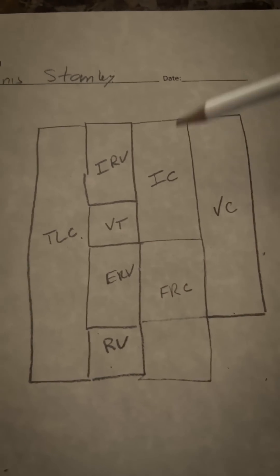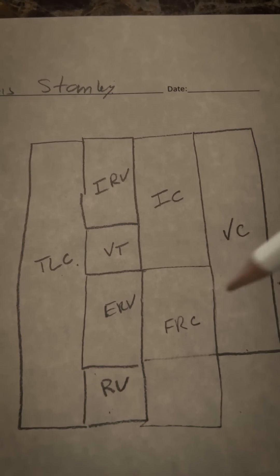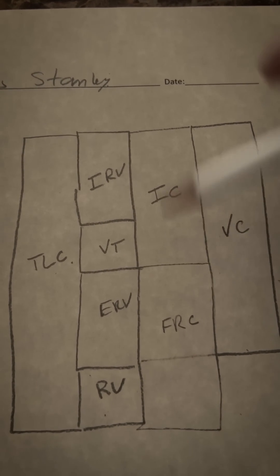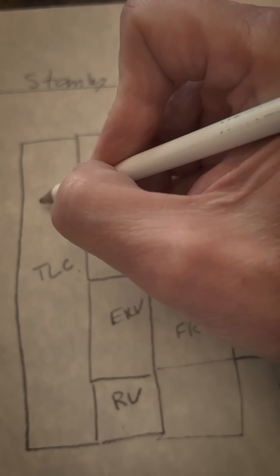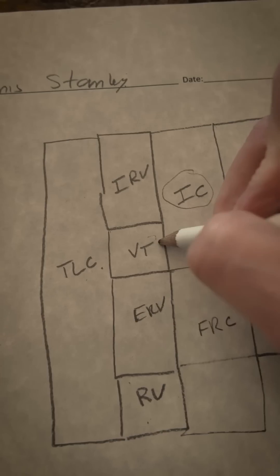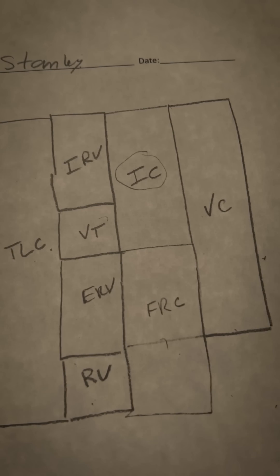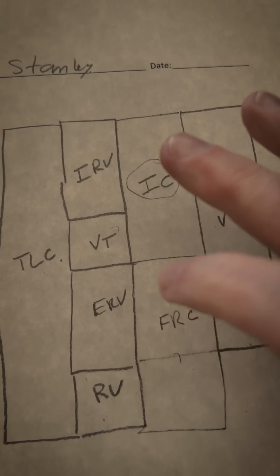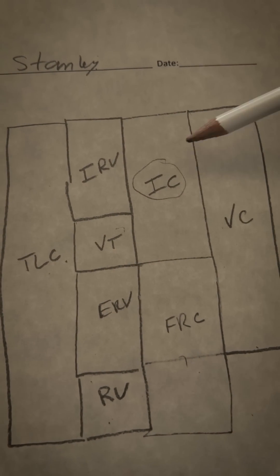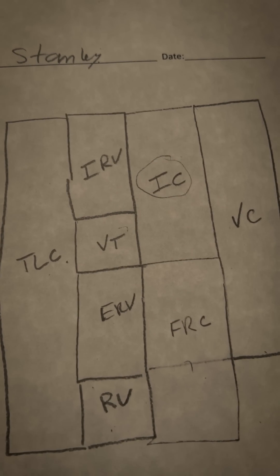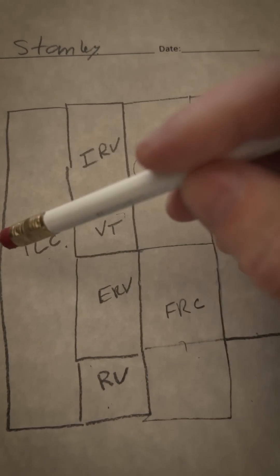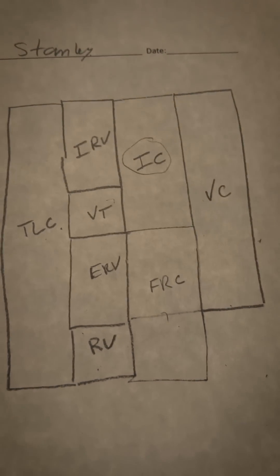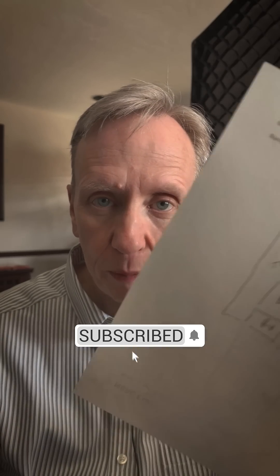The great part about this is that when I draw this even before the test begins, when I come to a PFT question where they want to know, say, the IC, but they give me values here and here and here, I can look at this diagram and basically visualize what to add to get to whatever they want me to find. And since this is in pencil, I can erase the values and use it again and again for multiple questions. With a piece of paper and a pencil, you can conquer the PFT questions on the NBRC exam.